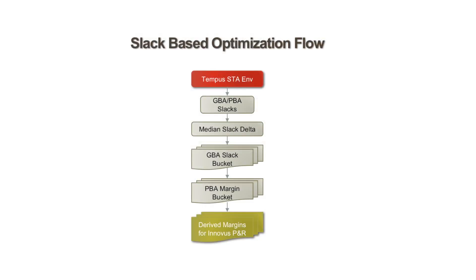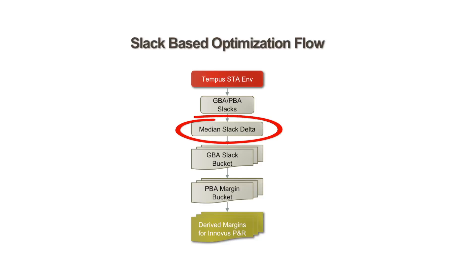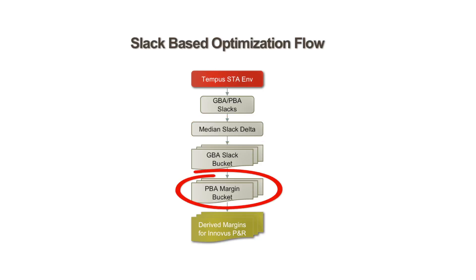To do so, what we do is we take out the path-based slacks from the Tempus environment, which is able to support both GBA and PBA. We take out the median slack differential across the slack buckets, and by coupling these paths, we try to estimate what is essentially a median margin that we are getting in slacks within the PBA versus GBA environment.